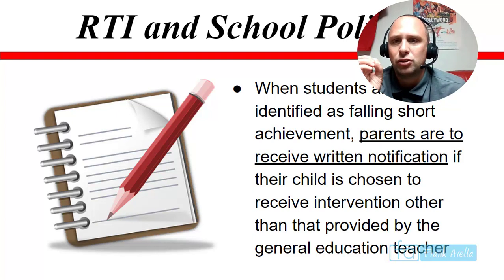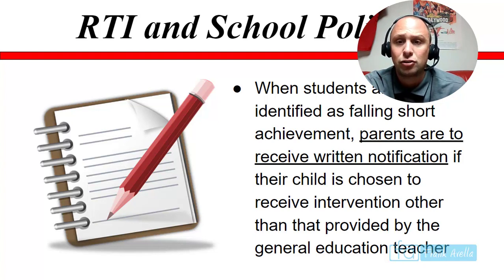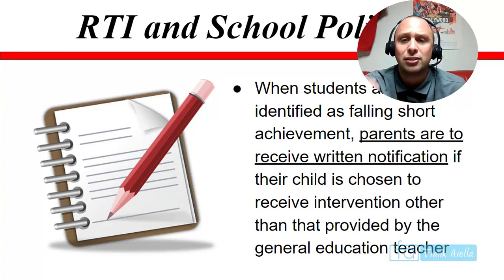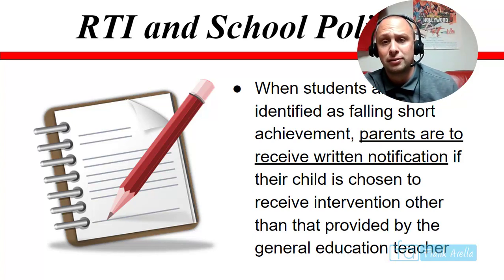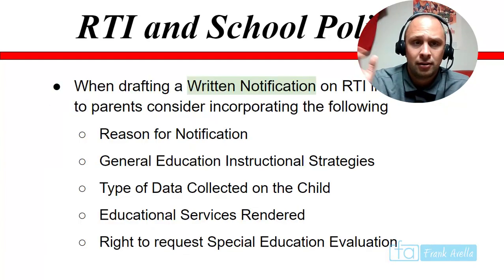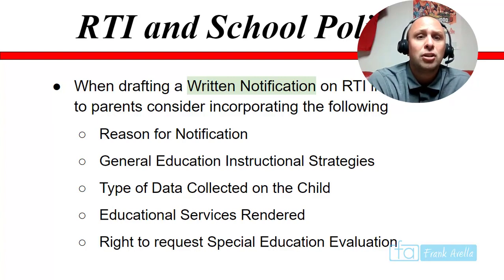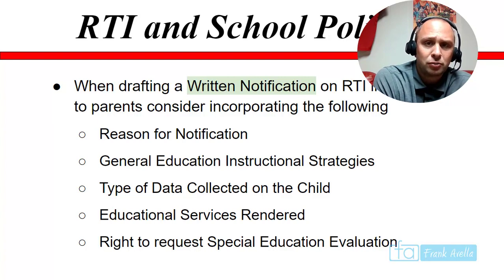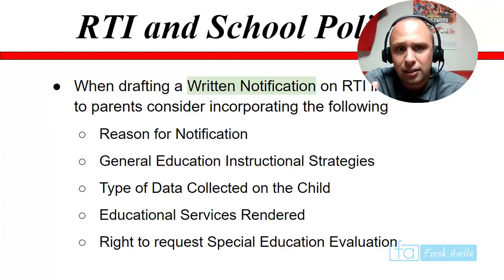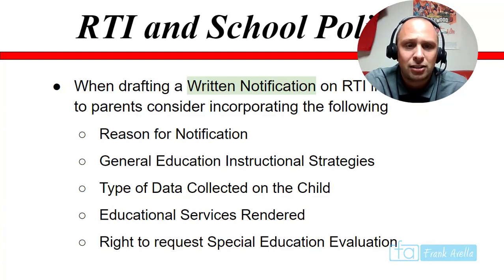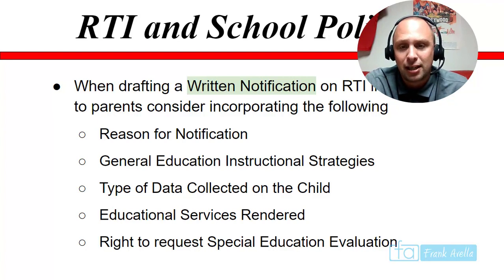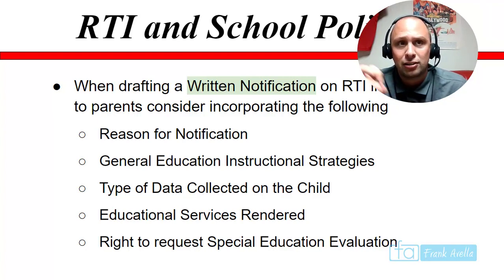RTI and school policies: when students are identified as falling short of achievement, parents must receive written notification if their child is chosen to receive intervention or any services provided by the general education teacher. When drafting a written notification on RTI interventions to parents, schools should include the reasons for notification, what strategies are being used, the type of data collected on the child, what services have been given, and the right to request a special education evaluation. RTI doesn't determine special education — it's just used as a screening method.